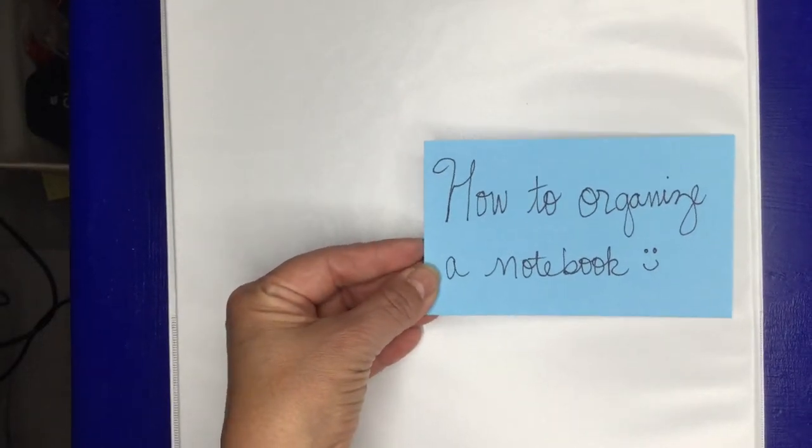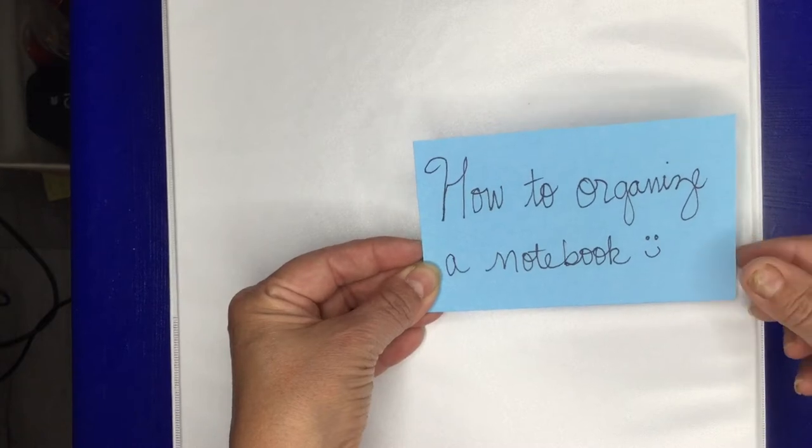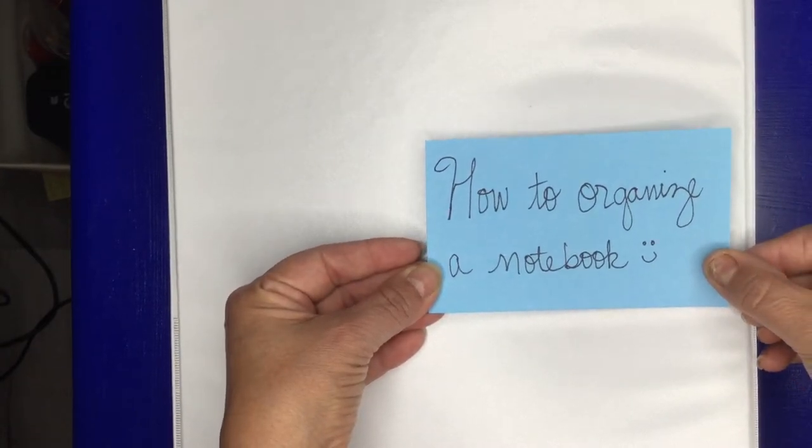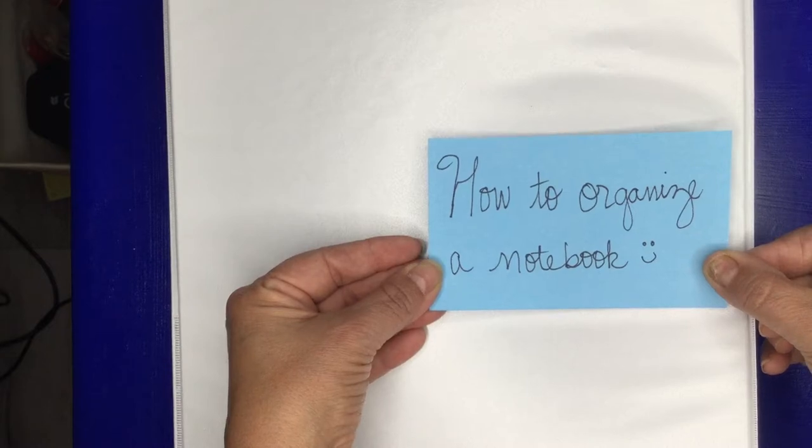Hello, I'm going to show you how to organize a notebook. Now we want to be as organized as possible and just use one thing, so we're going to use a three-ring binder.